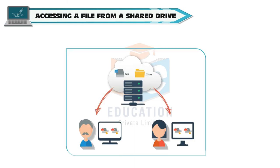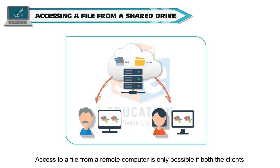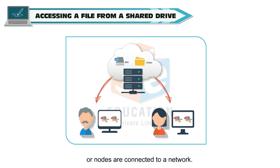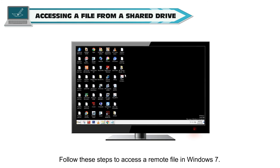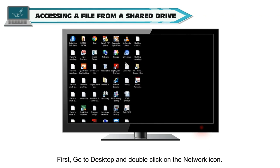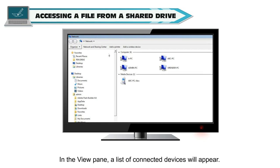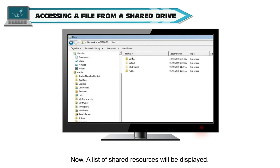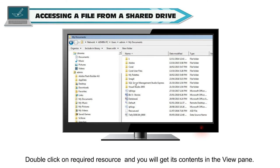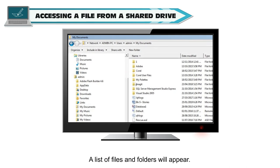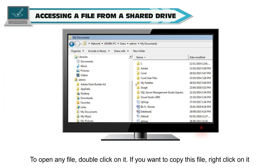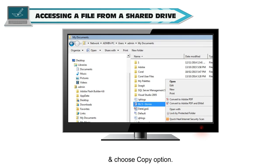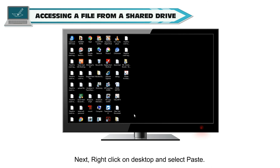Accessing a file from a shared drive: access to a file from a remote computer is only possible if both clients or nodes are connected to a network. Follow these steps to access a remote file in Windows 7: go to Desktop and double-click the Network icon; a list of connected devices will appear in the View pane; double-click on the device you are looking for; a list of shared resources will be displayed; double-click on the required resource to see its contents; a list of files and folders will appear. To open any file, double-click on it. To copy a file, right-click on it and choose Copy, then right-click on Desktop and select Paste; the file will be pasted on the desktop.